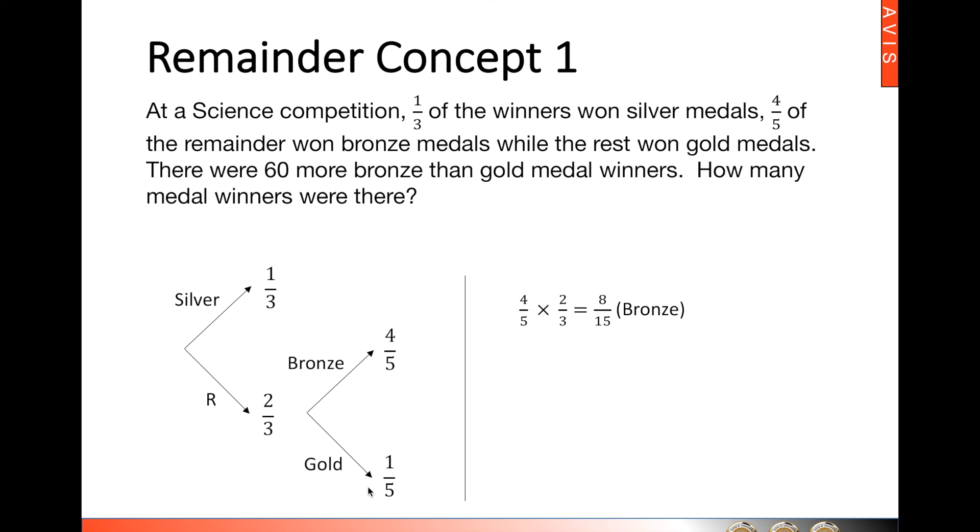For gold medal winners there's one fifth of two thirds. And again we will repeat this: one fifth multiplied by two thirds and it will give us two over fifteen. Now that means again there are fifteen units of winners of which two of them are gold medal winners.